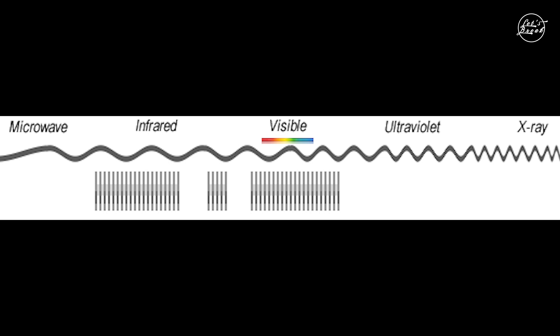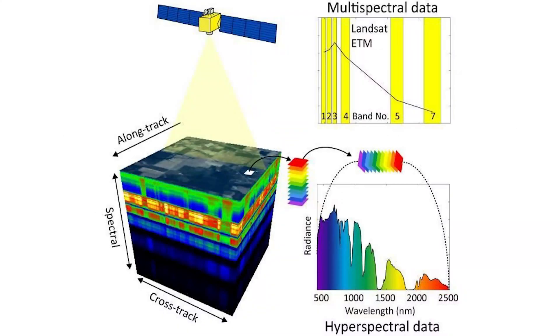For example, a multispectral image breaks light into 4 to 36 bands, then assigns those bands names such as red, green, blue, and near-infrared. Each band may span 0.05 micrometers in the electromagnetic spectrum. Similarly, hyperspectral imaging captures a spectrum of light, but it divides the light into hundreds of narrow spectral bands, making the spectral resolution very high.